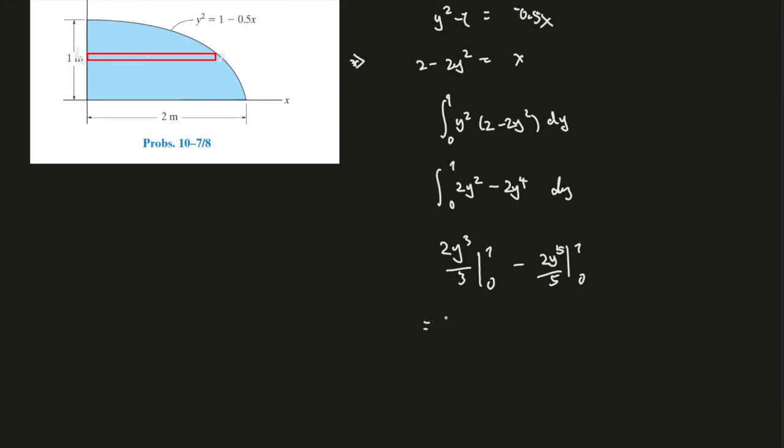So simplify equals 2 over 3 minus 2 over 5. Find a common denominator that would be 10 over 15 minus 6 over 15, which gave us 4 over 15, and that is meter to the power of 4. And that is the moment of inertia around the x-axis.